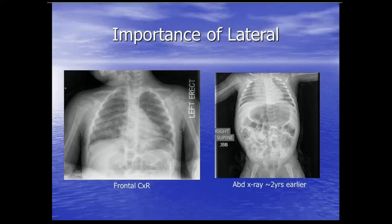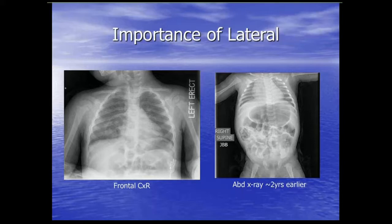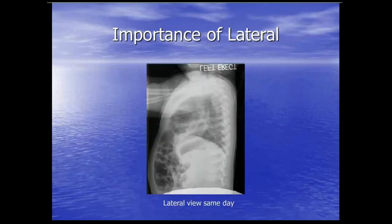This is the importance of the lateral view. A child came in with respiratory symptoms. On the frontal view there's a bubbly, patchy lucency that looks loculated, and we weren't sure what it was. An abdominal x-ray two years earlier showed nothing in that area. We got a lateral, which clearly showed herniating large bowel — this was a morgagni hernia causing the finding. The lateral solved the problem.